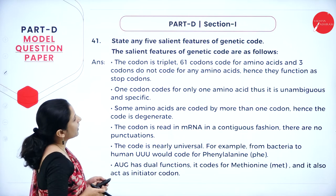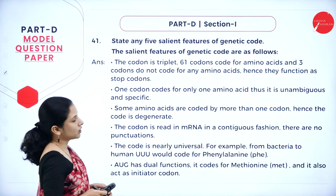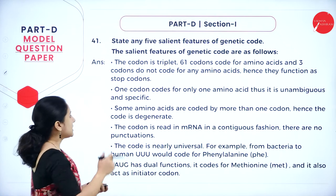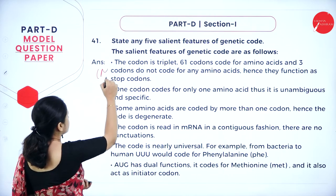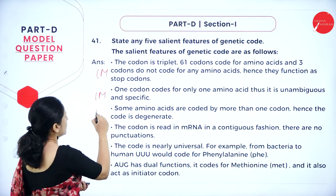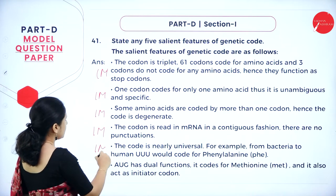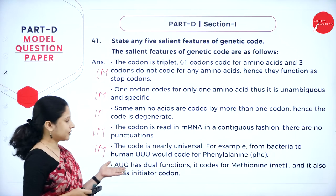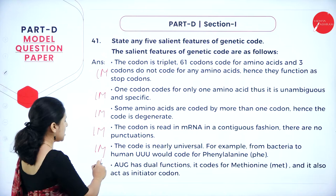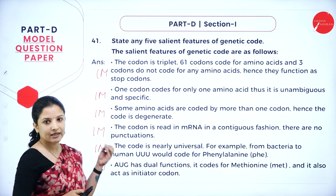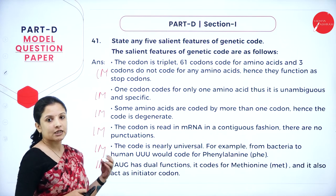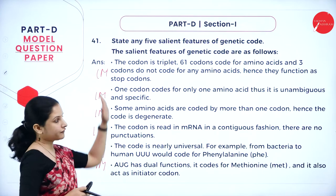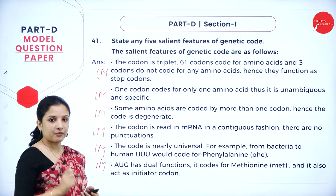Next question: state any five salient features of the genetic code. Each of the five features carries one mark each, giving five marks total. If the question just says 'write the salient features of genetic code' without specifying a number, analyze that it is a five-mark question and write five points. Read the question carefully and write accordingly.